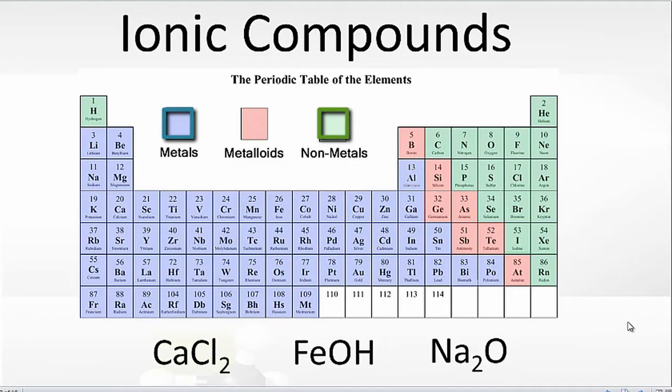So for something like CaCl2, calcium, that's a metal, and then chlorine, that's a non-metal. Metal plus one or more non-metals, that's going to be an ionic compound, and it's going to have ionic bonds.